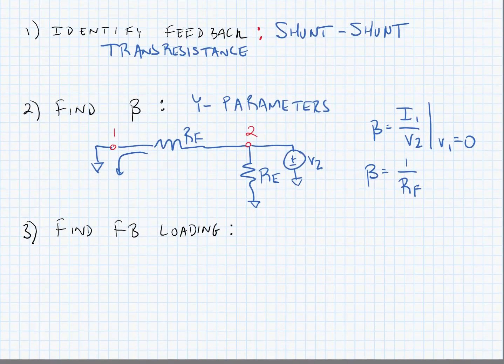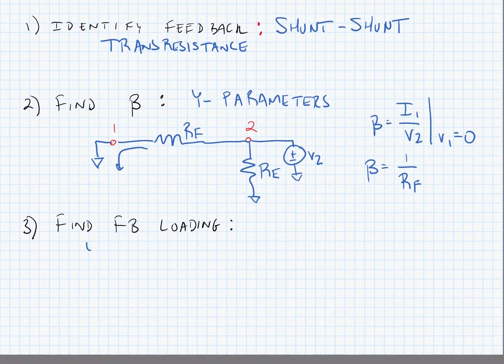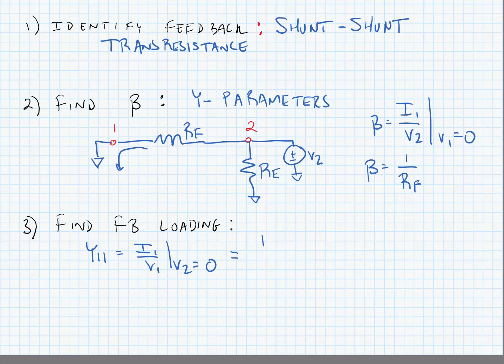Next, we need to find the feedback loading. To do this, we need to find y11, which is equal to i1 over v1 when v2 equals 0. This is also equal to 1 over RF. We also need to find y22, which is equal to i2 over v2 when v1 equals 0. This is equal to 1 over RF in parallel with RE.